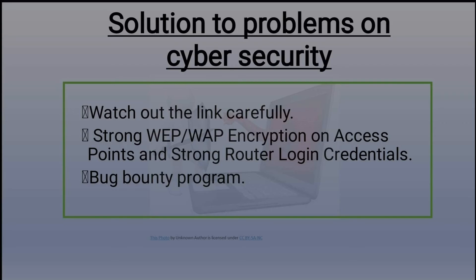Number four: watch out for links carefully. Cyber criminals use phishing techniques through emails, mobile messages, or social sites to steal information such as bank accounts, credit card details, and personal details. We can identify phishing by looking for suspects like poor grammar and punctuation, and promises of large financial rewards. We must be careful while accessing links on any social media. Number five: strong WEP and WAP encryption on access points and strong router login credentials.